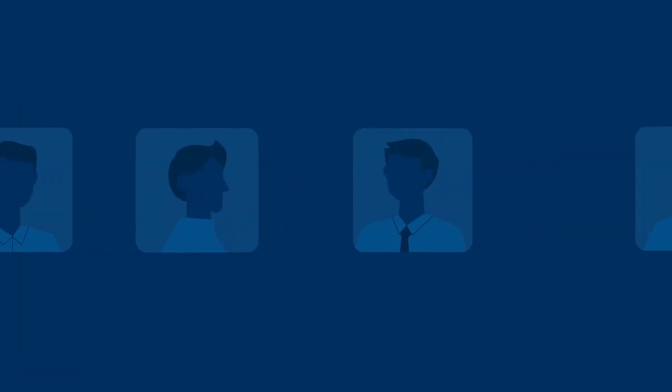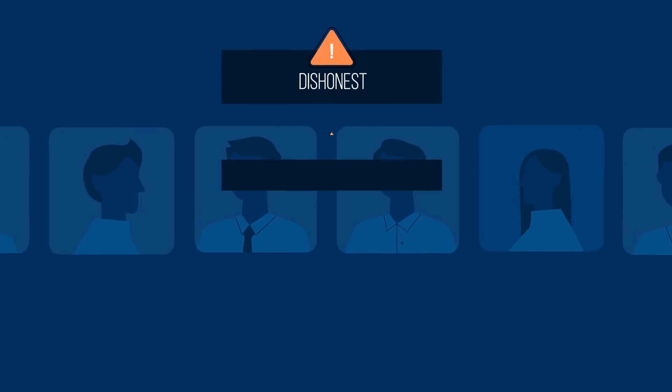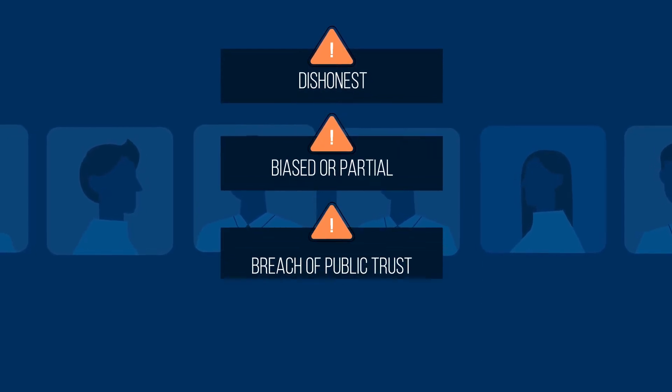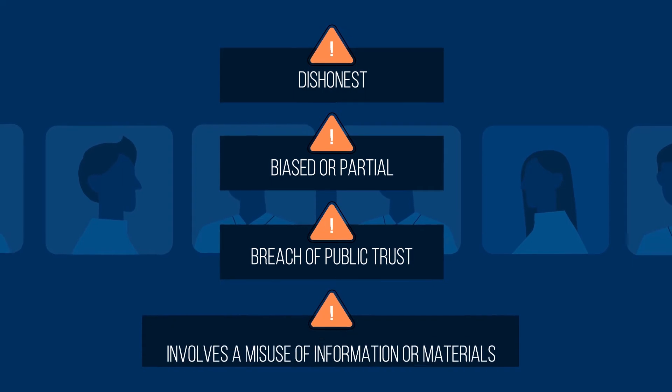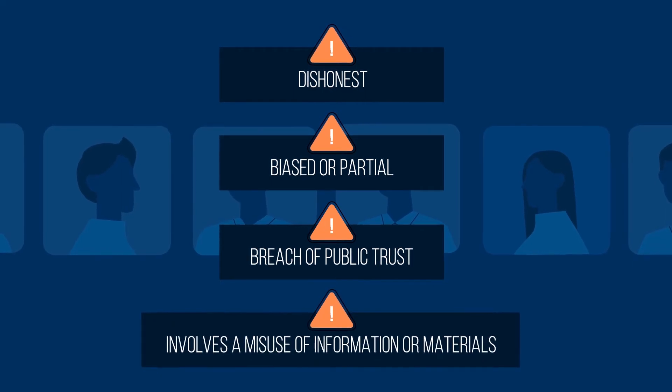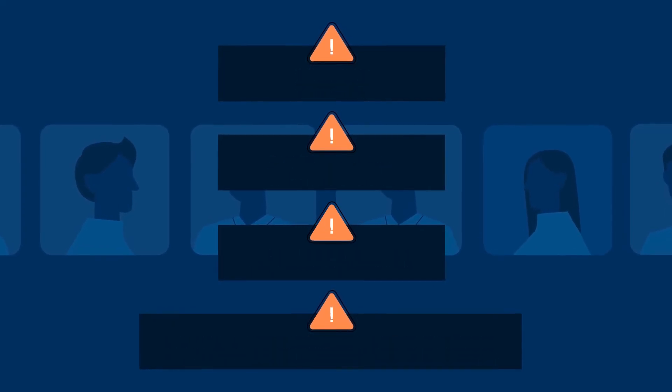But in general, corruption by a public official involves conduct that is intentionally dishonest, biased or partial, and is a breach of public trust or a misuse of information or materials. In essence, corruption involves the deliberate abuse of public office.